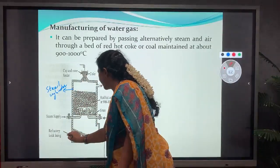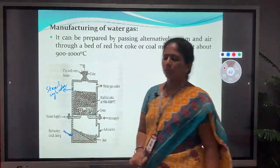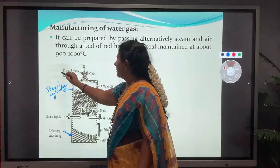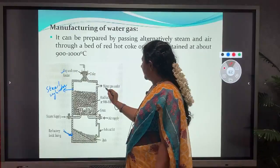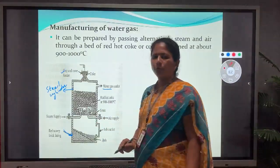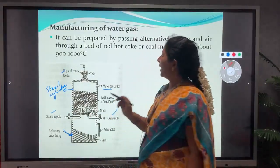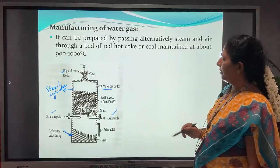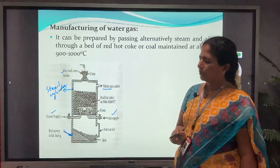The reactor consists of a cup and cone feeder at the top and an outlet at the top for water gas. It has two inlet pipes for steam and air passed alternatively. Unlike producer gas manufacturing where air mixed with steam is passed together, here steam and air are passed alternately through two different pipes.